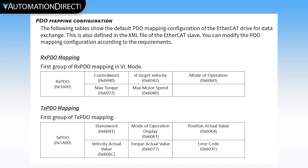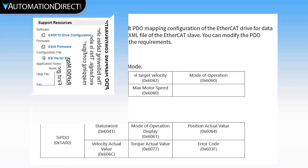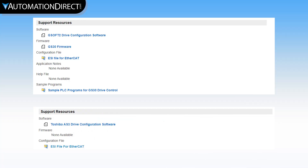The RxPDO is the data received by the drive and contains the control word, mode of operation, target torque, and target velocity. The TxPDO is sent by the drive and contains the status word, current mode of operation, actual position, actual speed, actual torque, and any error codes. The ESI file for all drives we sell that support EtherCAT can be found with the other drive resources on the communication adapter page on our website. I've included links in the description below as well.